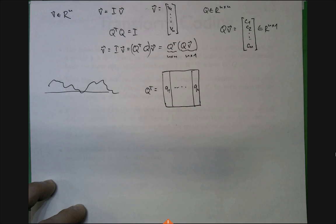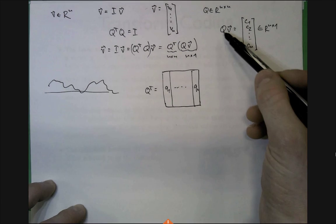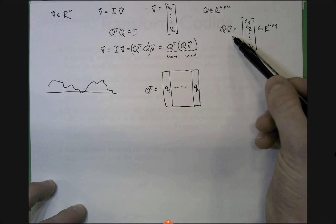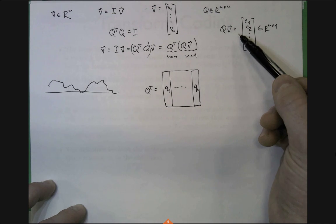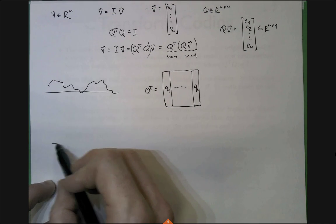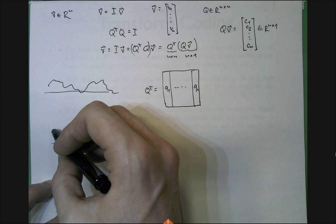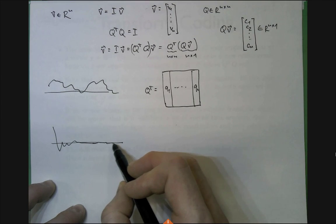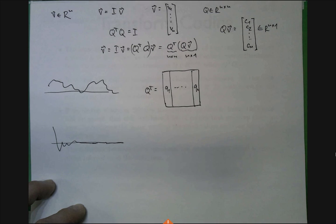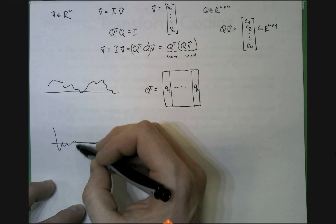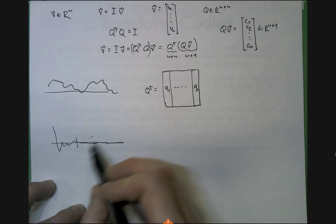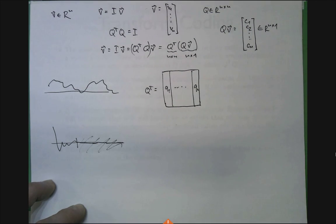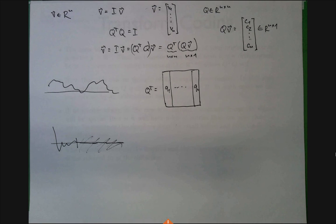After the discrete cosine transformation, the signal will concentrate its energy at the beginning and the rest will be almost zero — and that's really begging for compression. You can say: let's truncate this, discard the small ones, and keep just the top coefficients. That's essentially the main idea.